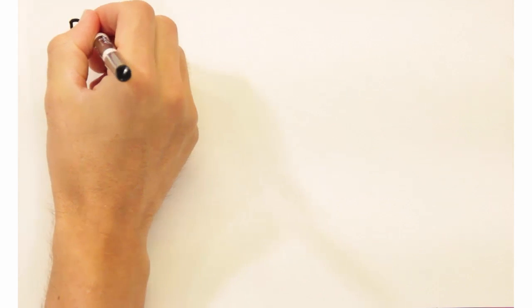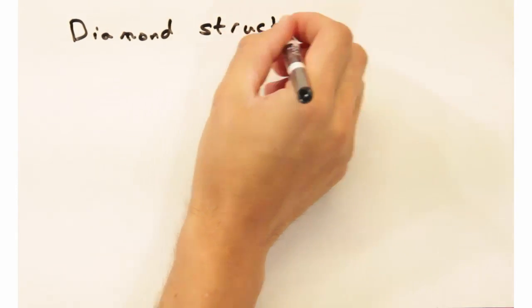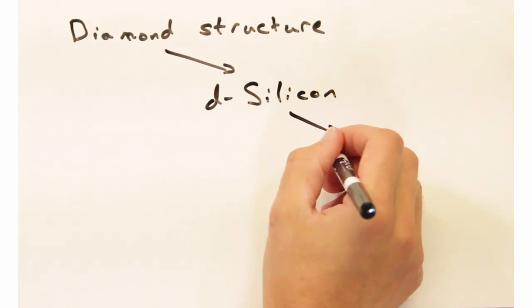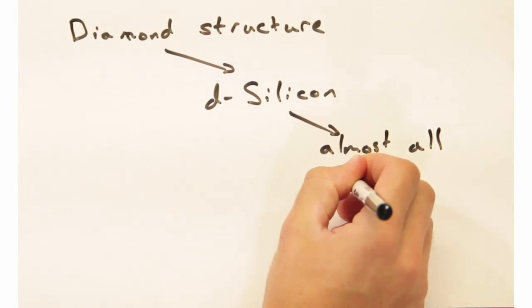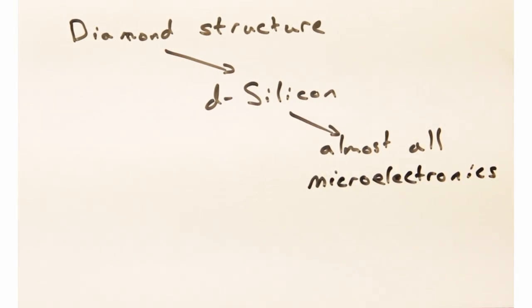Why diamond in particular? So we're interested in the diamond structure because silicon, which forms the basis of virtually all of microelectronics in the last 60 years, also forms in the diamond structure.